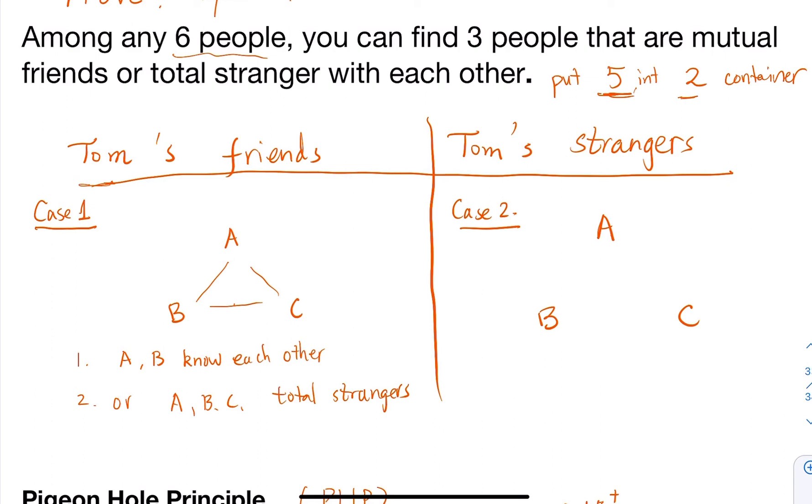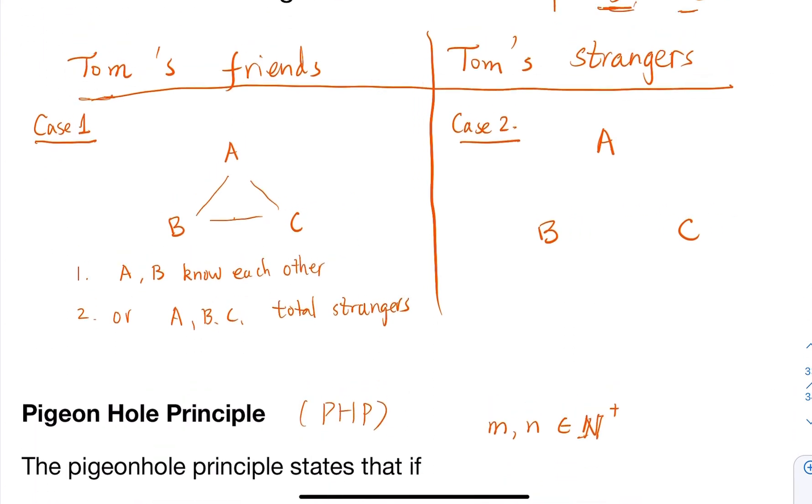Is our statement still true? Let's use similar reasoning. Do A, B, C know each other? Maybe they do. If they know each other, then we're done - we found three people who are mutual friends with each other.